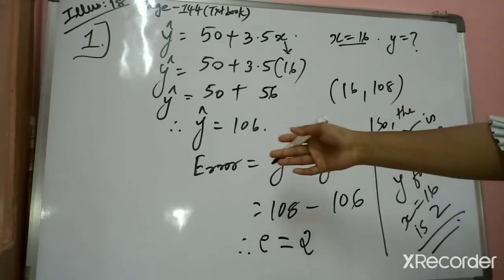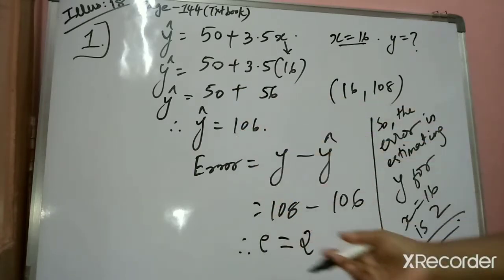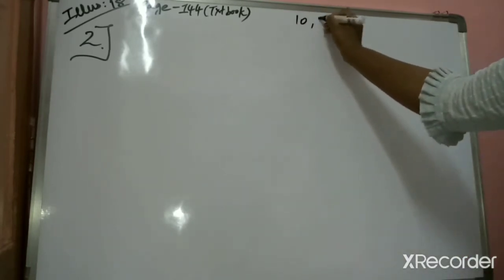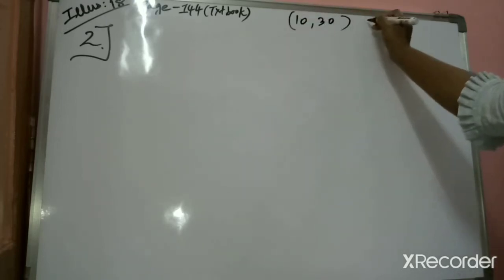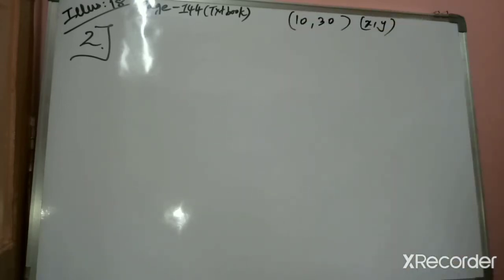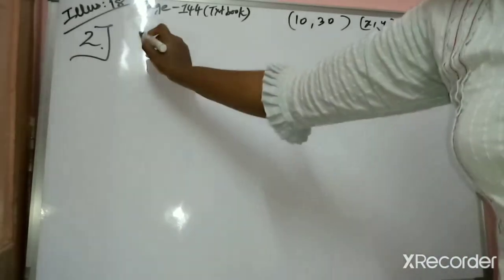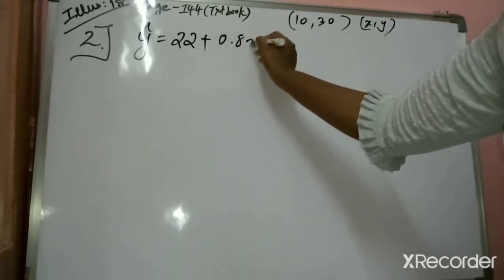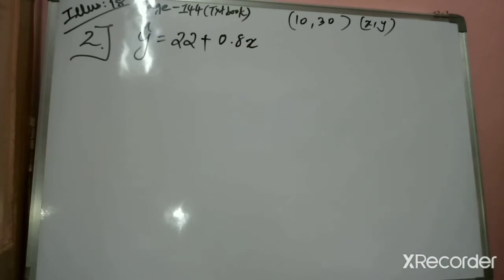Now let's solve the second subsection of illustration 18. The question says: if the observation X=10 and Y=30 is used in fitting the line Y cap equals 22 plus 0.8X, find the error in estimating Y for X equals 10.